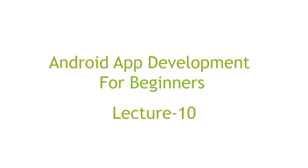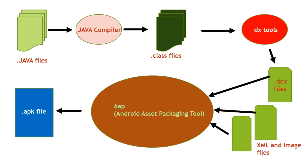Let's see in brief how a Java code is converted to an APK file. Here is the diagram. The .java file that we write in Android Studio is first converted to a .class file by the Java compiler. Then these .class files are converted to .dex files by tools known as dx tools. Now, AAPT — that is the Android Asset Packaging Tool — combines the .dex files along with the images and XML to create a new file, that is the .apk file, which is known as the Android app. All these steps are automated using Gradle.